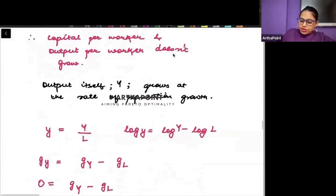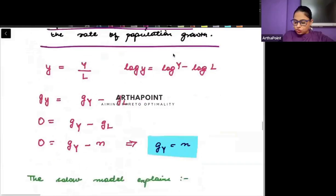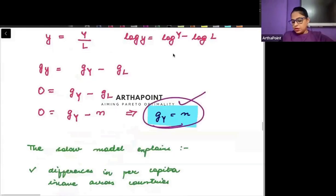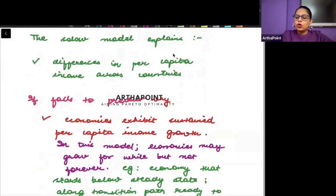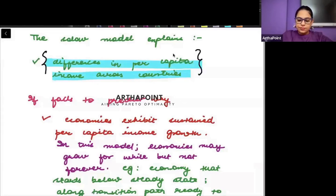Output itself is growing at the rate of population. The growth rate in output is n, growth rate in capital is n, but small k and small y are not growing. The Solow model explains differences in per capita income across countries — why income differs across countries — because of different growth rates of capital and labor, which is due to different growth rates of population.